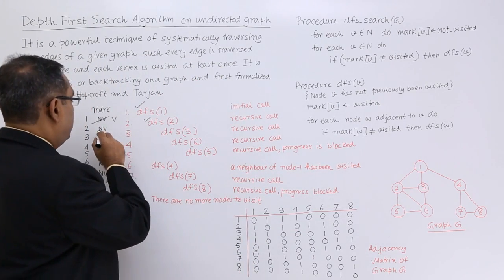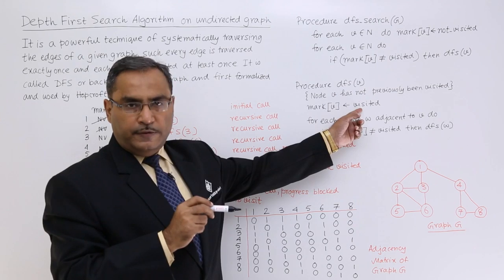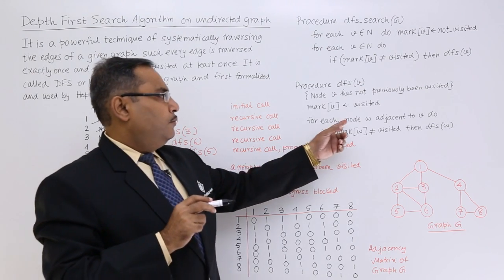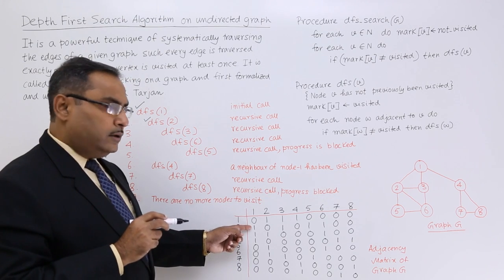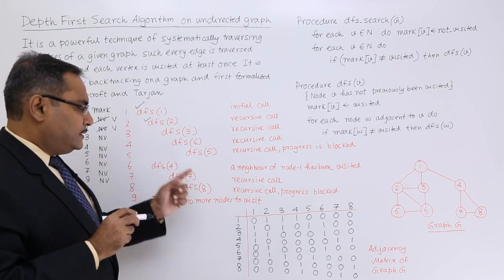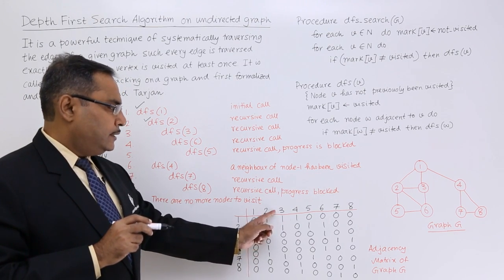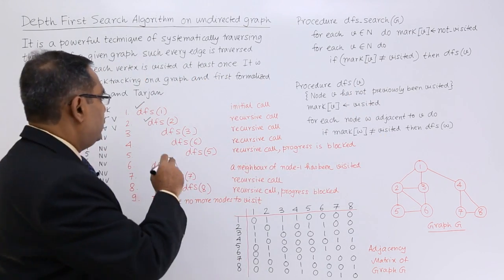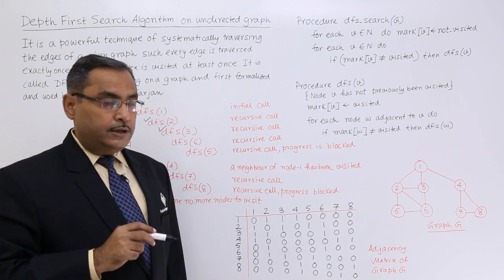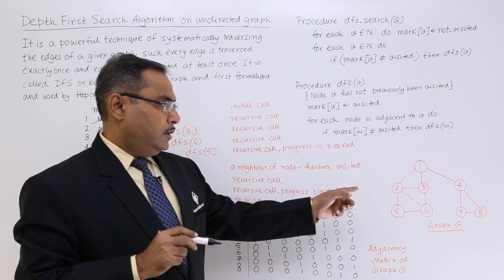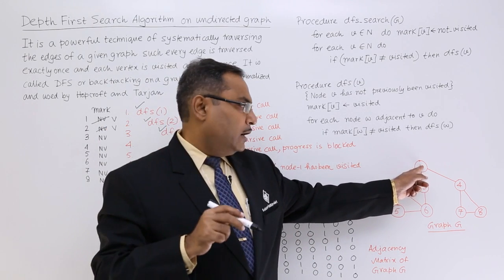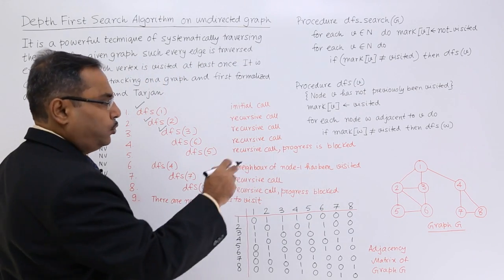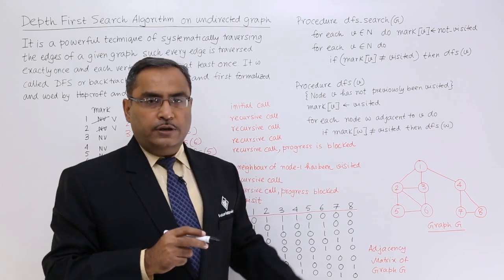DFS(1) calls DFS(2), shown by indentation. Inside DFS(2), mark of 2 becomes visited. Node 2's adjacent nodes include node 1, which is already visited, and node 3, which is not visited. So DFS(3) is called. Inside DFS(3), mark of 3 becomes visited. Node 3's adjacent nodes 1 and 2 are already visited, but node 6 is not. So DFS(6) will be called.